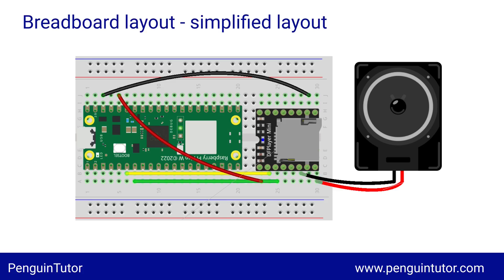I've ordered the DF Player Mini Pro which has onboard storage and stereo output, so I'll take a look at that in future. If you want the output louder there's also a digital to analogue output which could be connected to an amplifier instead.